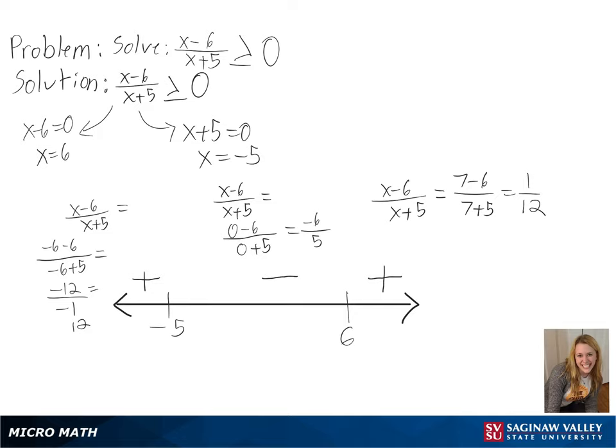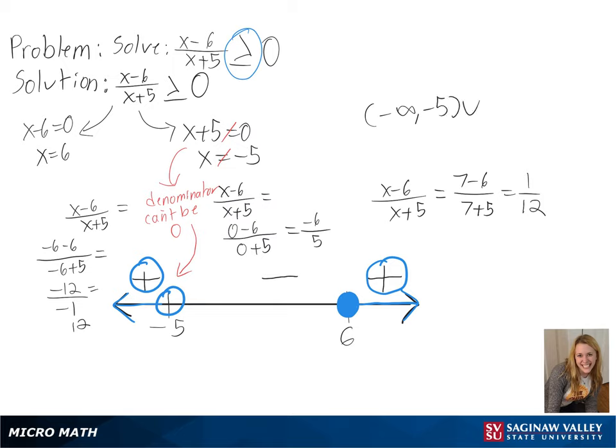For our solution, we need to find what is greater than or equal to 0. We can include 6 in this, but our denominator cannot be equal to 0, so we will not include negative 5. So we will be using our positive regions, and we will get negative infinity to negative 5, and 6 to infinity as our final answer.